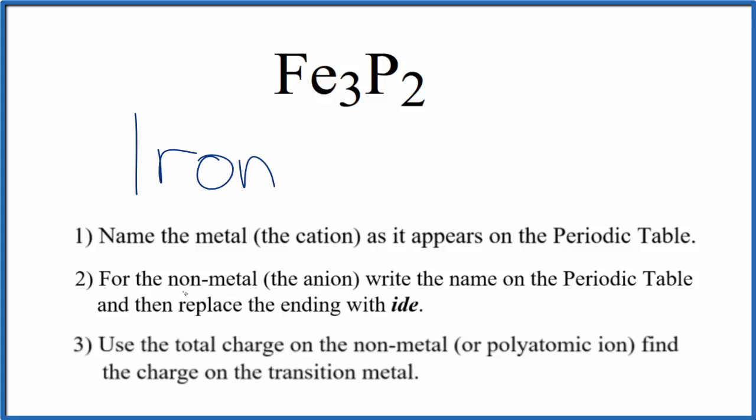Next, we'll write the name for the nonmetal as it appears on the periodic table. That's P for phosphorus, lowercase p, and then we cross out the ending here and replace it with ide.